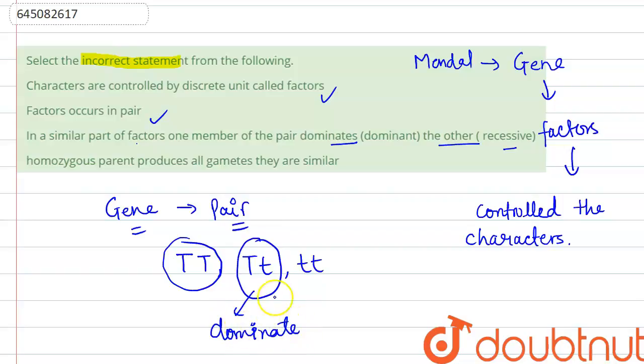Which dominates is known as dominant character, and the other is recessive, which cannot be seen. The characteristic of this gene is masked by the dominant one. So this statement is the wrong one because it says in a similar pair of factors. So this statement is wrong.